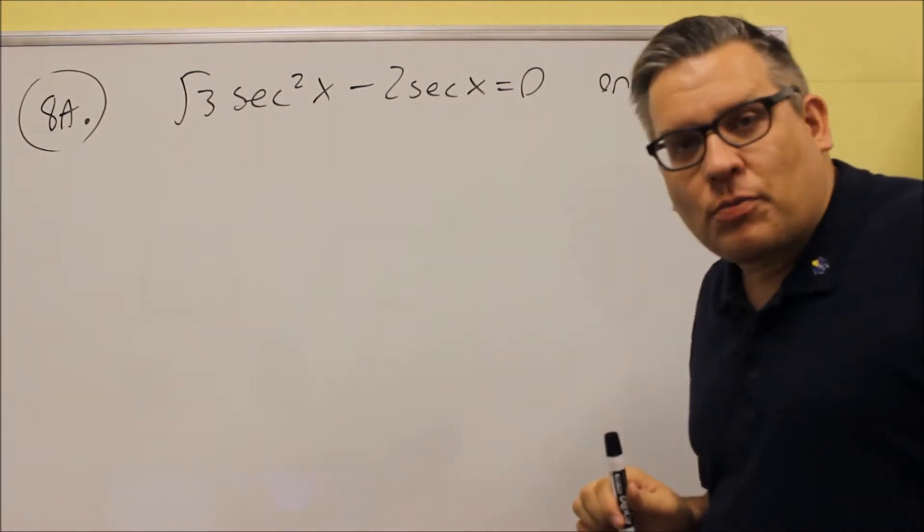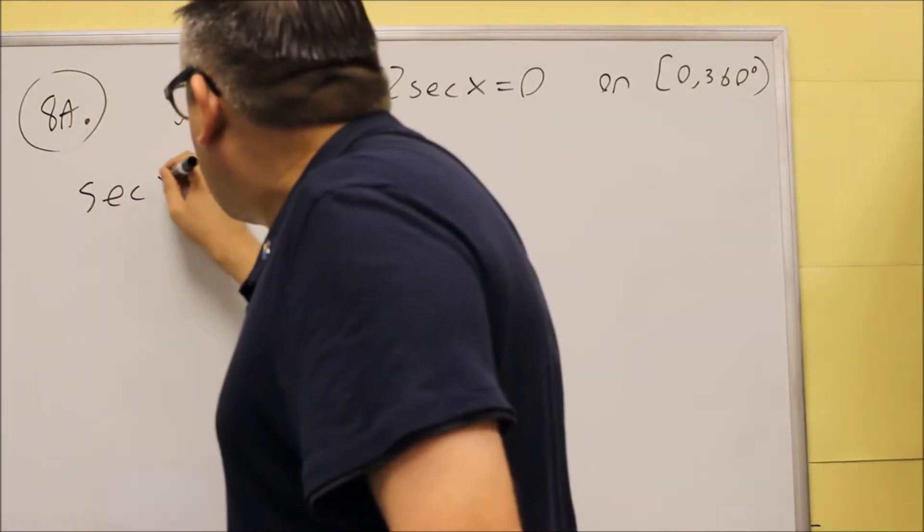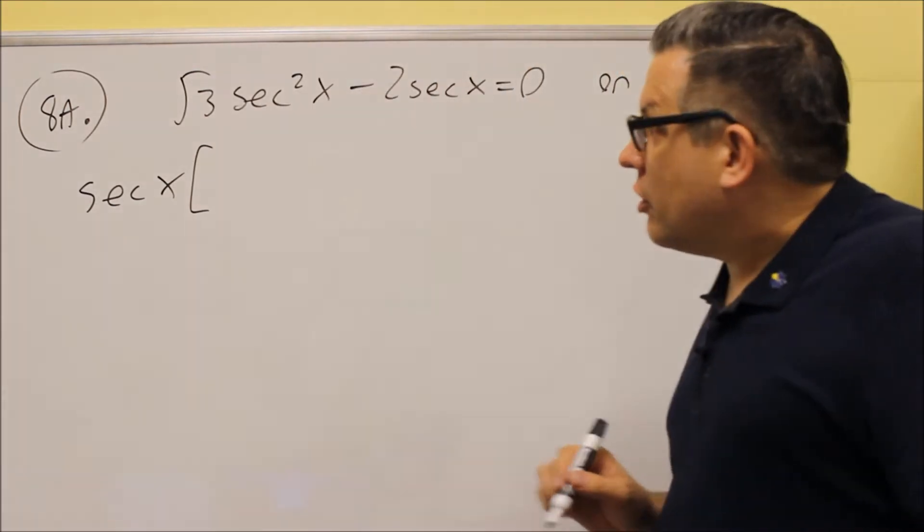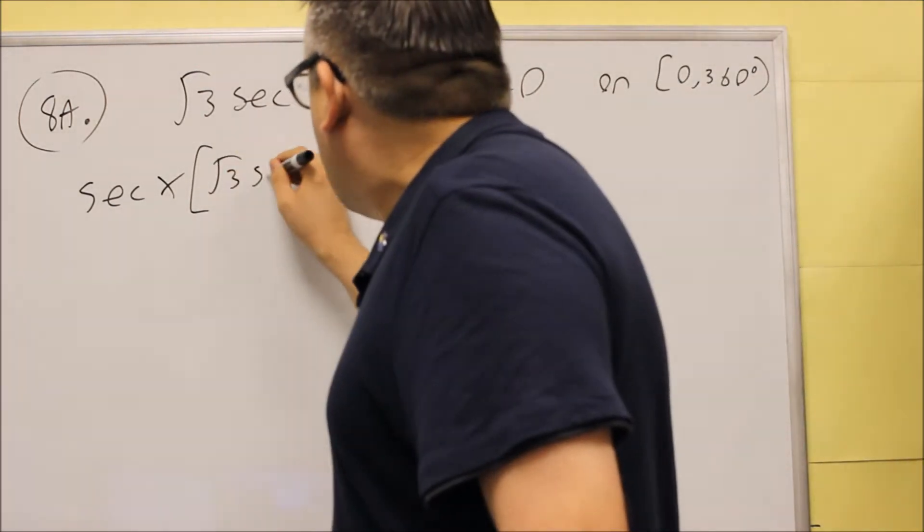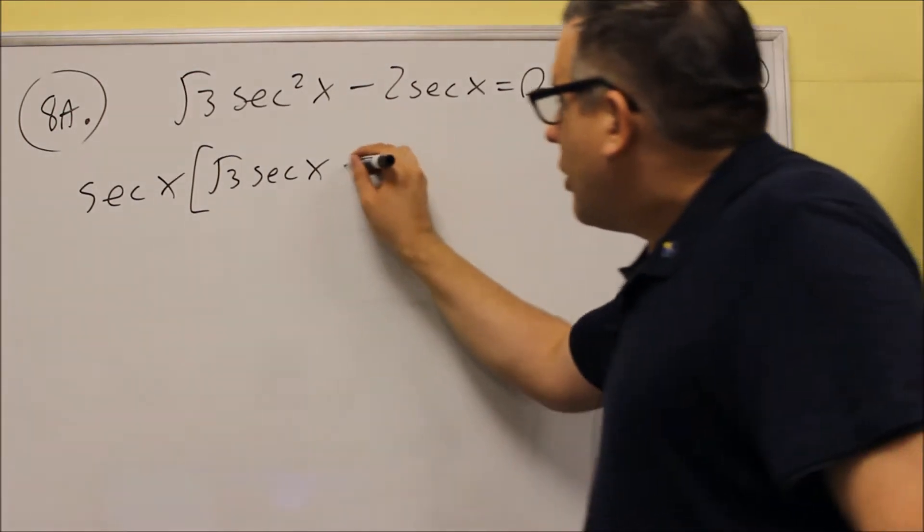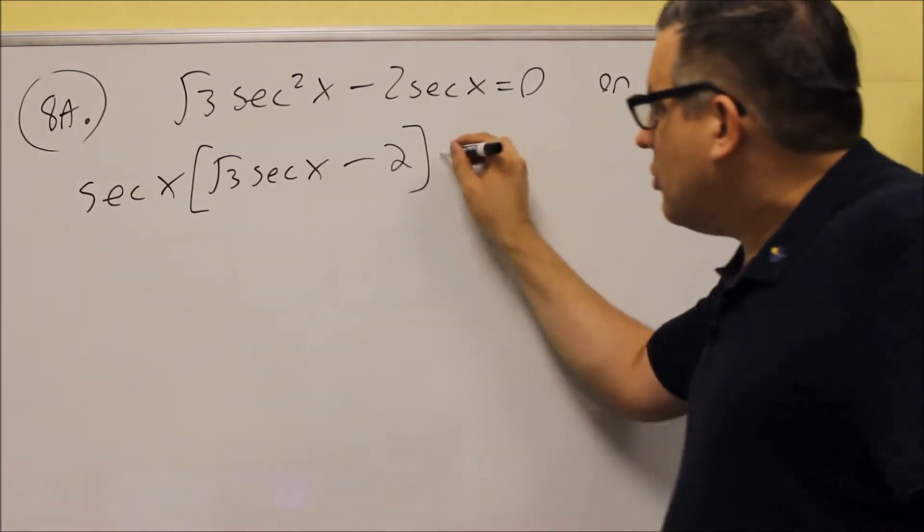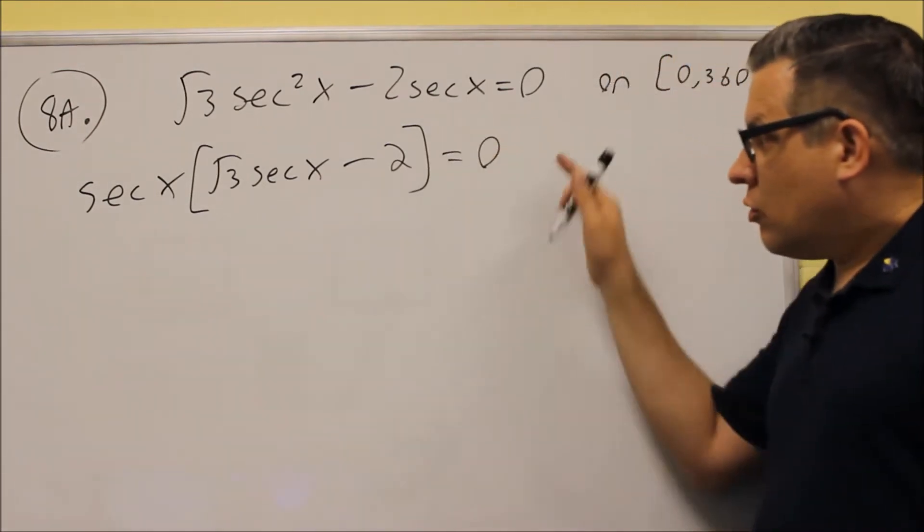We see that there is a secant that repeats here, and so we pull out a secant, factor that one out, and you are going to get square root of three secant x left over inside. Then you get a minus sign, and then what is left over is a two,